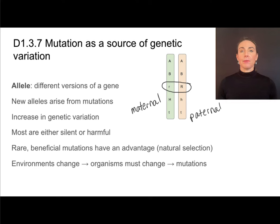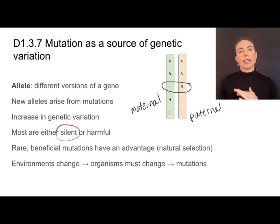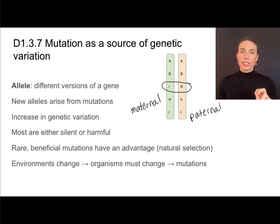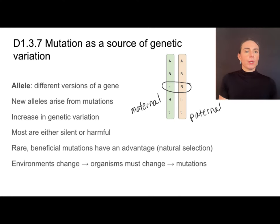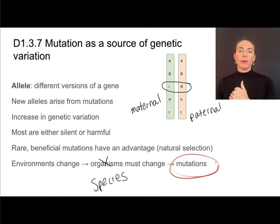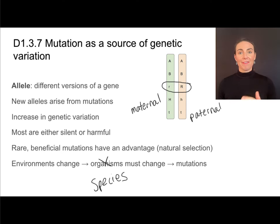If we think about this process as a whole — theme D, continuity and change — environments change, and species must change. That process of a changing environment, yet still being able to survive those changes, is driven by mutations. Without this genetic variation, a species might not have those beneficial mutations to survive that change.